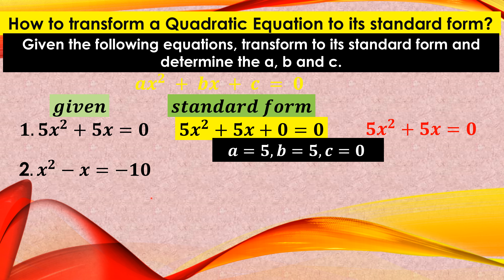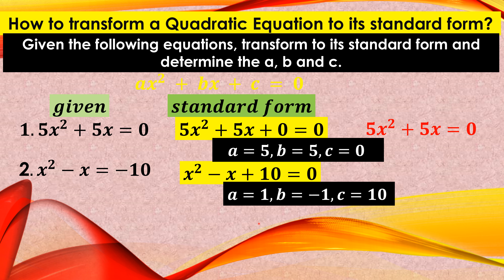Number 2: X squared minus X equals negative 10. The standard form requires all terms on the left side equated to 0. So we transpose the negative 10 to the left — it becomes positive 10. This gives us X squared minus X plus 10 equals 0. Therefore, A is 1, B is negative 1, and C is 10.